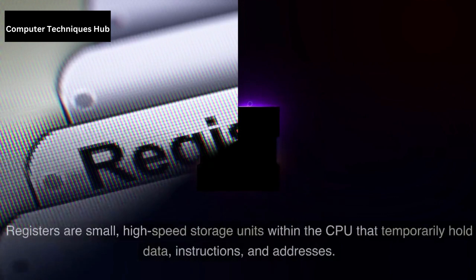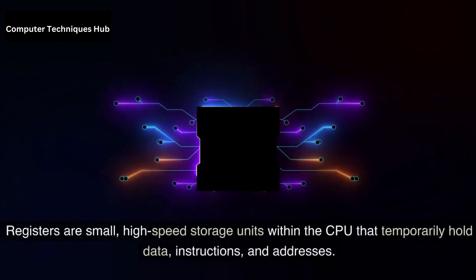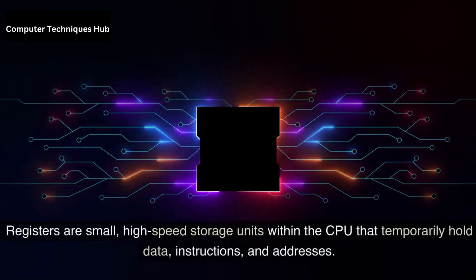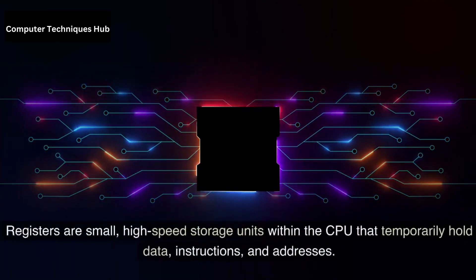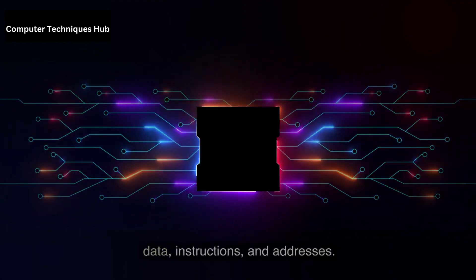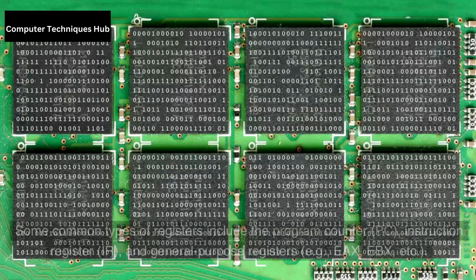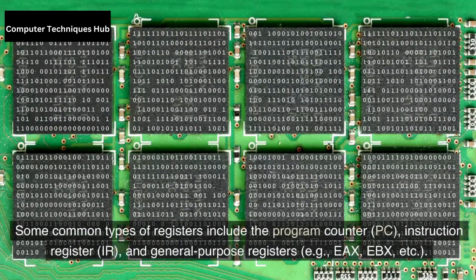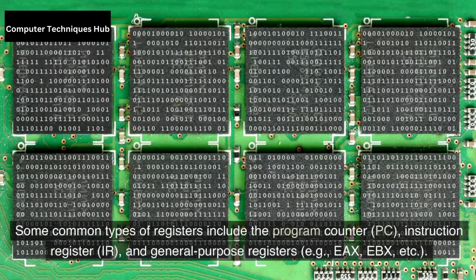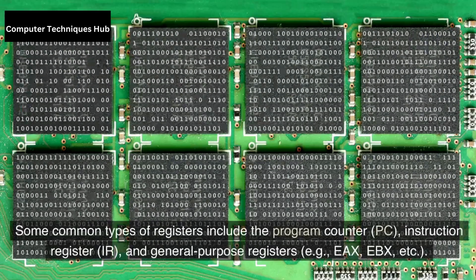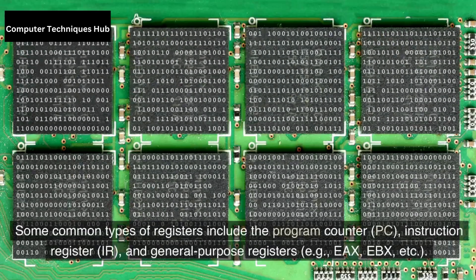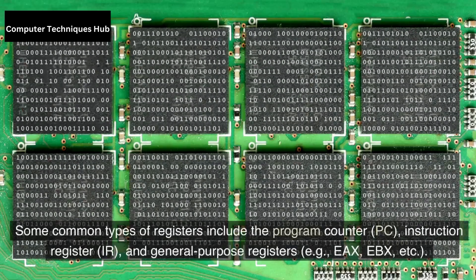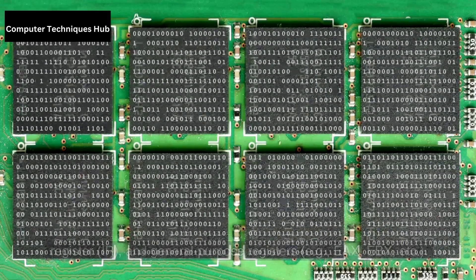Registers. Registers are small, high-speed storage units within the CPU that temporarily hold data, instructions, and addresses. Some common types of registers include the program counter (PC), instruction register (IR), and general purpose registers, e.g., EAX, EBX, etc.